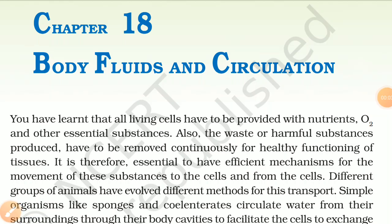Chapter 18: Body Fluids and Circulation. All living cells have to be provided with nutrients, O2 and other essential substances. The waste or harmful substances produced have to be removed continuously for healthy functioning of tissues. It is therefore essential to have efficient mechanisms for the movement of these substances to and from the cell. Different groups of animals have evolved different methods for this transport.